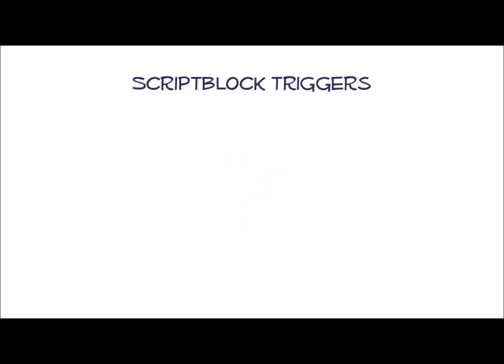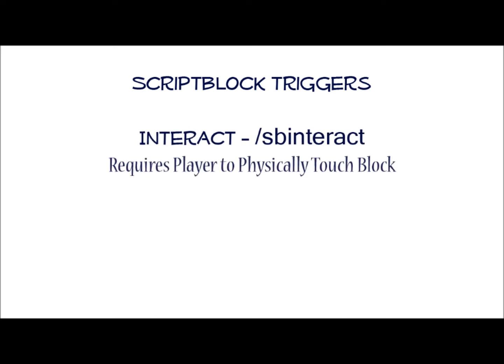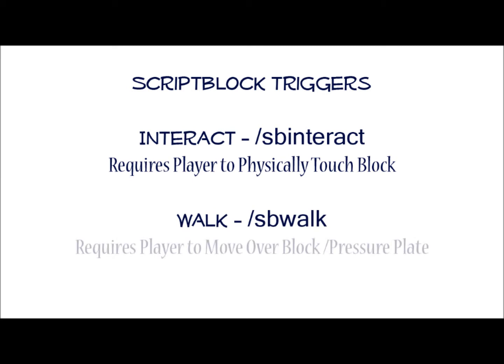ScriptBlock utilizes one of two triggers: Interact and Walk. Interact requires that the player physically touch the block with the script attached to it in order to run — for example, to press a button or pull a lever — while Walk requires only that the player pass over the block with the script attached to it, or the pressure plate above it. The trigger is represented in the beginning of the script by either //sbinteract for interactive triggers or //sbwalk for walk triggers.